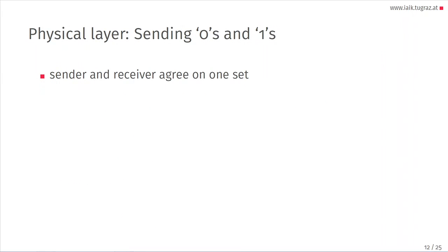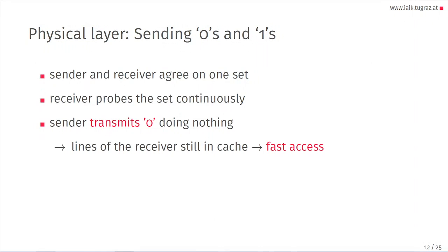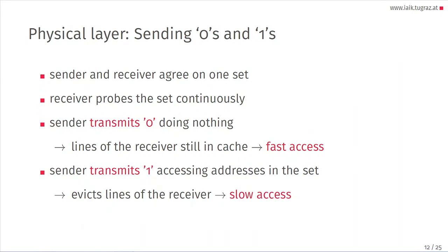For the physical layer, to send zeros and ones, the sender and receiver have to agree on one cache set. The receiver probes this set continuously. If the sender wants to transmit a zero, it does nothing — the receiver probes the set, lines are still in cache, and it's a fast access. If the sender wants to transmit a one, it accesses the addresses in the set, evicting the receiver's lines, resulting in a slow access. So zero equals fast access and one equals slow access.